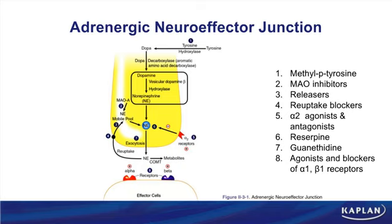It's always good to reflect on other pathways. For example, when we look at acetylcholine synthesis, do you recall what the rate-limiting step was? That's right, it was the uptake of choline. Here, it's the conversion of tyrosine to DOPA by tyrosine hydroxylase. DOPA is then converted to dopamine by DOPA-decarboxylase. Dopamine is then converted to norepinephrine by dopamine beta-hydroxylase.